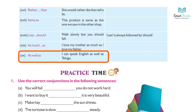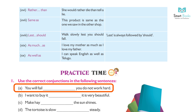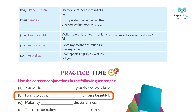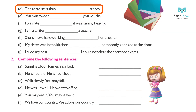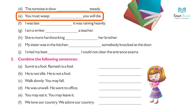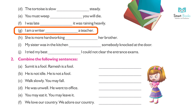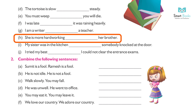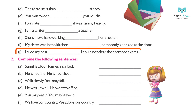14. So...that — The man is so weak that he cannot eat properly. 15. Not only...but also — He is not only tall but also handsome. 16. Rather...than — She would rather die than tell a lie. 17. Same as — This product is the same as the one we saw in the other shop. 18. Lest...should — Walk slowly lest you should fall. 'Lest' is always followed by 'should'. 19. As much as — I love my mother as much as I love my father. 20. As well as — I can speak English as well as Telugu.